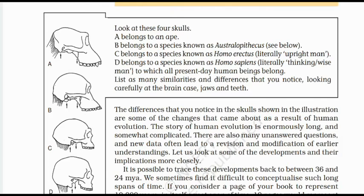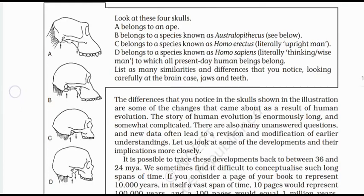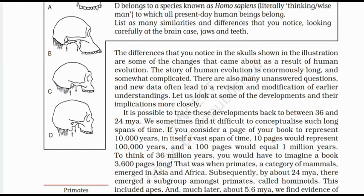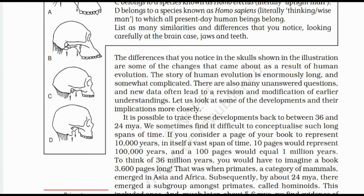These four categories are given to list some similarities and differences which you can carefully notice by looking at their jaws, teeth, brains, and so on. This is an activity for you — list as many similarities and differences you notice looking carefully at the brain case, jaws, and teeth. For example, skull A has small sharp teeth, B has somewhat flattened teeth, C is more properly arranged, and D is very properly arranged.